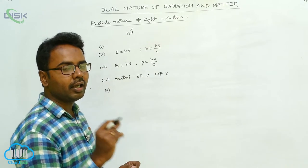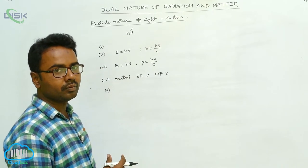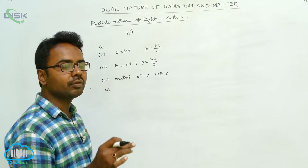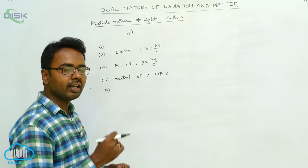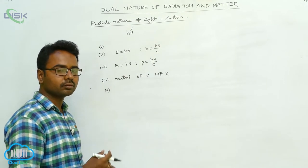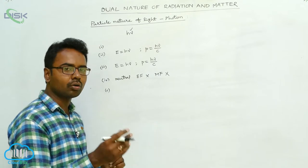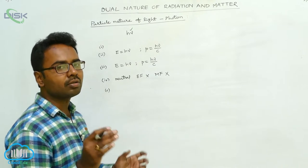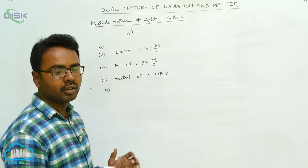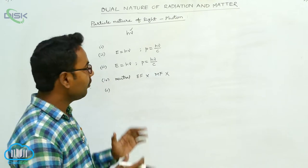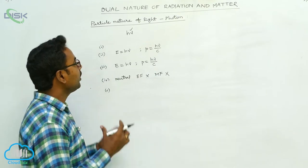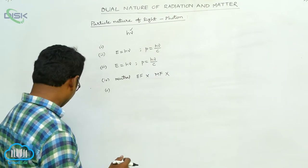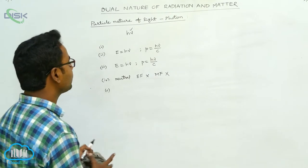In a photon-electron collision, the conservation of total energy and the conservation of total momentum always hold. During any photon-electron collision, the total energy and total momentum remain constant — they are conserved. This summarizes the particle nature of light. Now we will study the wave nature of matter.